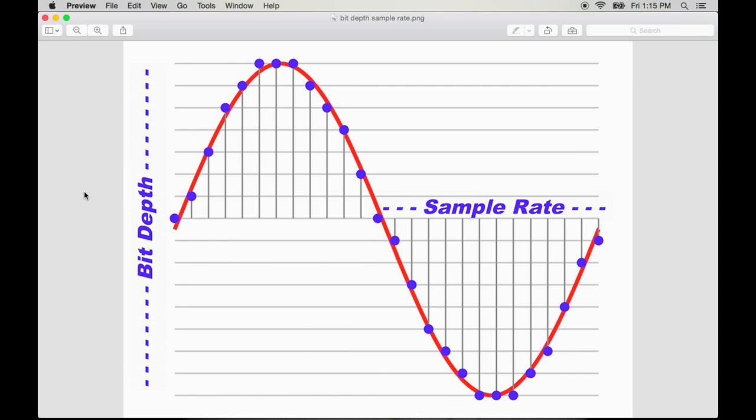The extent to which digitized sound matches the original sound depends on the accuracy at which the computer samples this analog information. There's two variables that determine this accuracy: bit depth and sample rate.